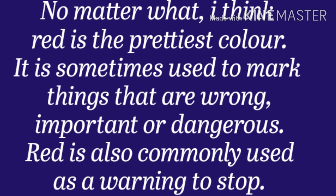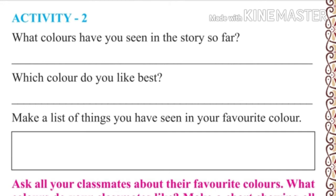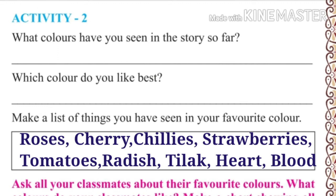I like roses too. Make a list of things you have seen in that color. I like roses, cheese, strawberry, tomatoes, bread dish, tilak, heart, blood.